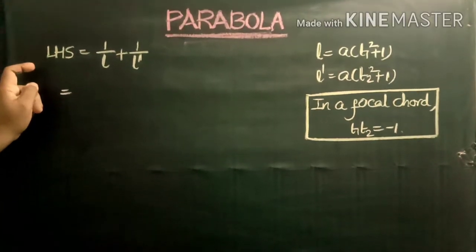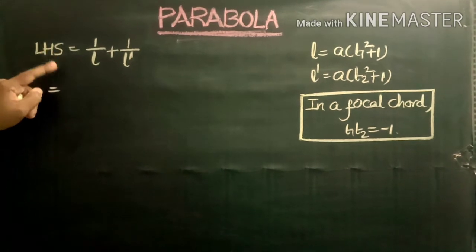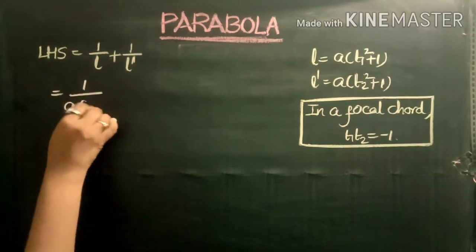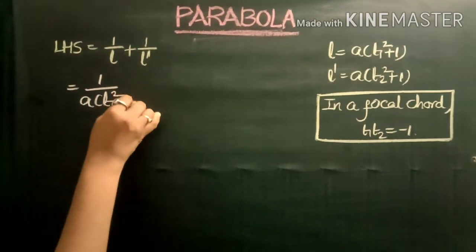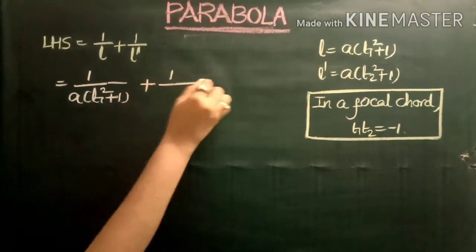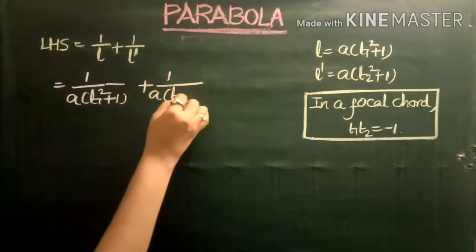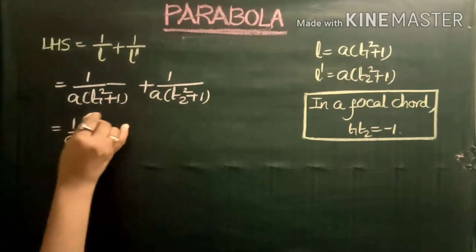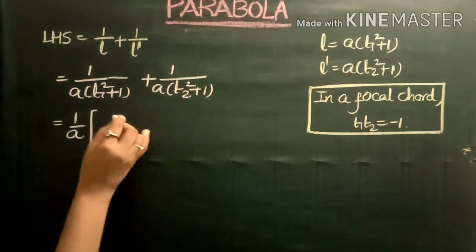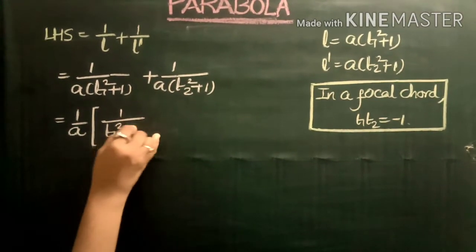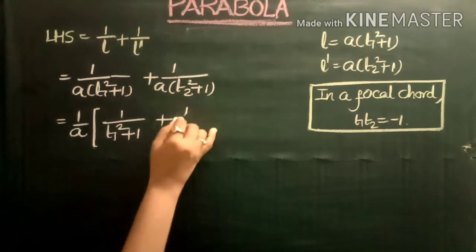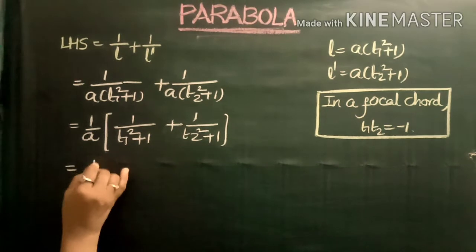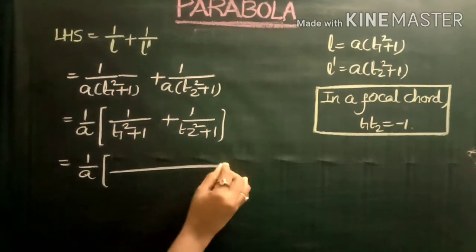The LHS is 1/L + 1/L'. Replacing values: 1/[a(T1² + 1)] + 1/[a(T2² + 1)]. Now 1/a is a common factor in both terms, so taking 1/a common: (1/a) × [1/(T1² + 1) + 1/(T2² + 1)]. Now taking the LCM of the two fractions inside.